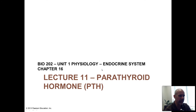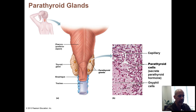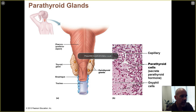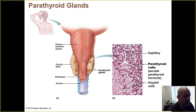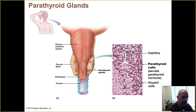Lecture number 11. We're going to talk about parathyroid hormone, PTH. I am hoping that you guys learned about this hormone when you took Biology 201. We'll talk about it a little bit more here as we go over the endocrine system. The parathyroid glands are these little itty-bitty glands that are located on the posterior side of the thyroid.